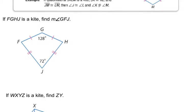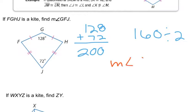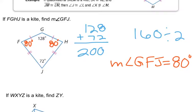If this is a kite, find angle GFJ. A kite is still a quadrilateral, so all angles add up to 360 degrees. Adding 128 and 72 gives 200, so angles G and J together are 200 degrees, leaving 160 degrees for angles F and H combined. Since F and H are congruent in a kite, divide 160 by 2, giving angle GFJ equal to 80 degrees.